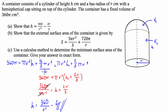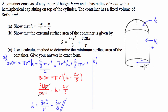So that's the first part, part A, done. Now for part B, it's asking us to show that the external surface area of the container is given by a specific expression. With the surface area, we're going to have three different parts to add together: the area of the circle underneath, the area of the wrap-around lateral surface, and the surface area of half a sphere.